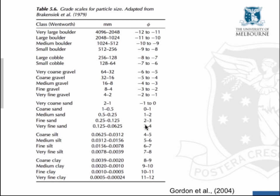Once we've sampled the sediments and have information about their size, we can communicate that using the Wentworth scale, where particular size classes are assigned a descriptive name. We have boulders, cobbles, gravel, sand, silt, and clay. It's useful to remember the range for sand, which goes from around 0.05 mm up to 2 mm, with silts below and gravels above. These sizes, given on a linear scale in millimetres, can also be converted to a phi scale using log base 2, which gives perhaps an easier way of representing size, although many prefer dimensions in millimetres.